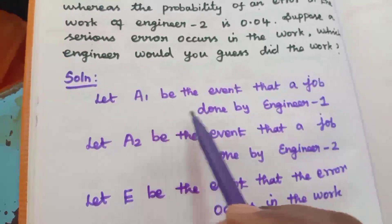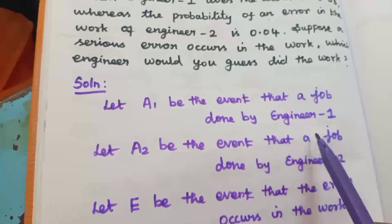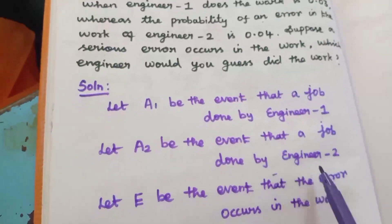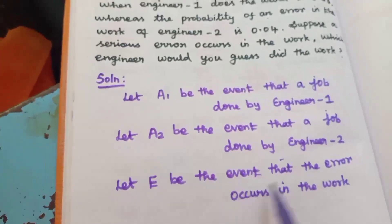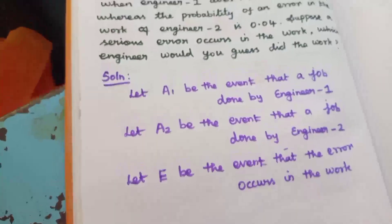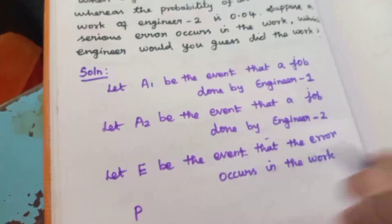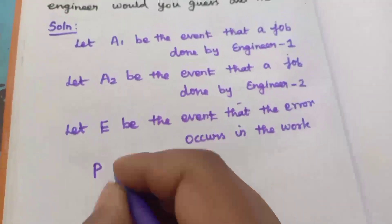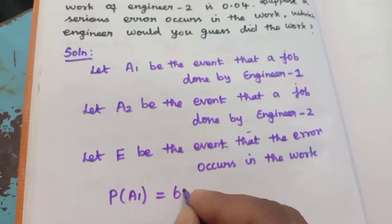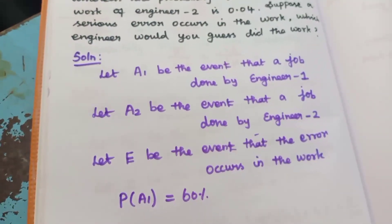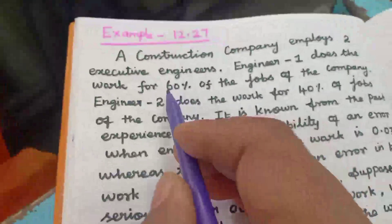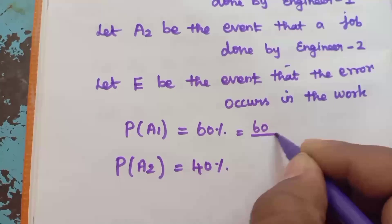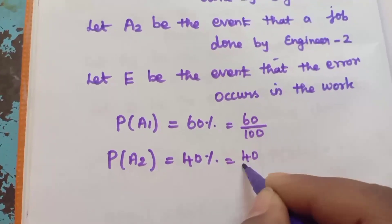Solution. Let A1 be the event that the job is done by engineer 1, and let A2 be the event that the job is done by engineer 2. Let E be the event that an error occurs in the work. So, probability of A1 is equal to 60%, and probability of A2 is equal to 40%, as given in the question. We can write these as 60/100 and 40/100.